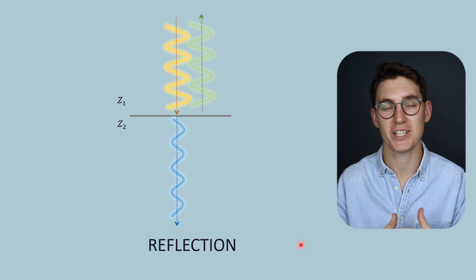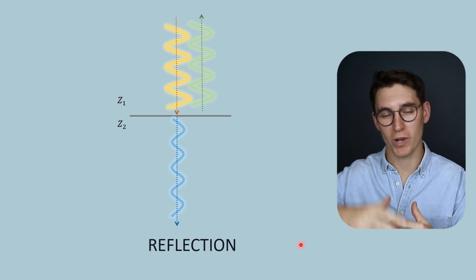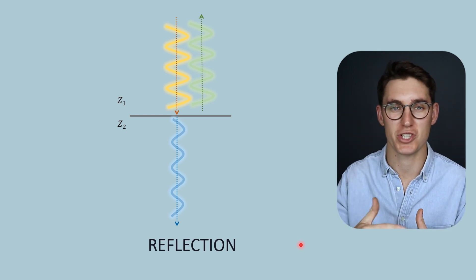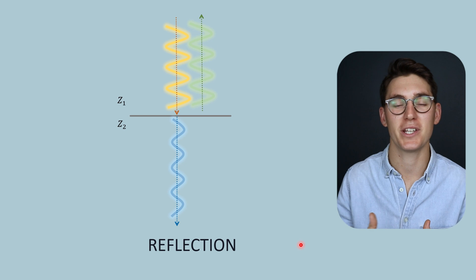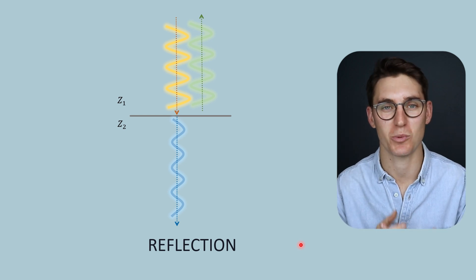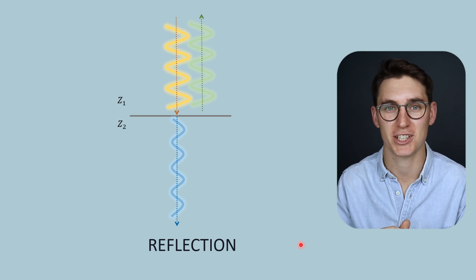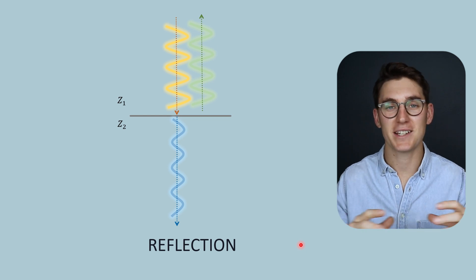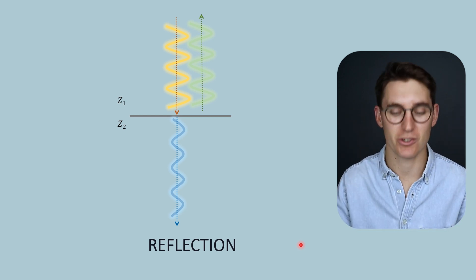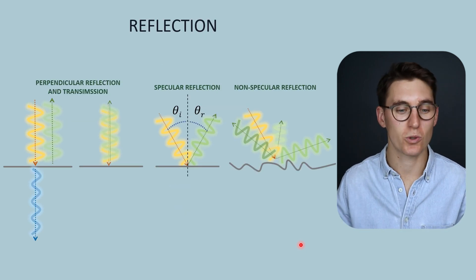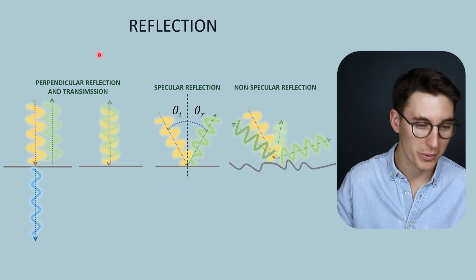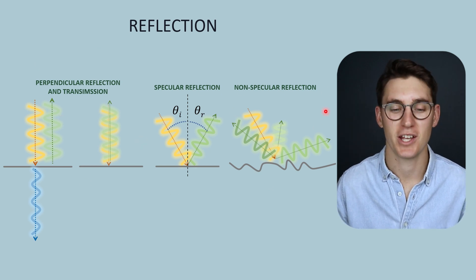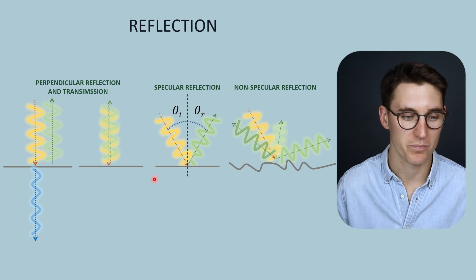That type of tissue interaction — where we get some echoes going back towards our ultrasound machine and some being transmitted through that tissue boundary — is what's known as reflection, which we're going to be looking at today. We can break down reflection into three main categories: perpendicular reflection, specular reflection, or non-specular reflection.